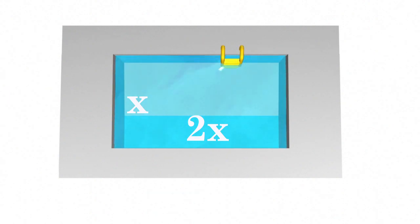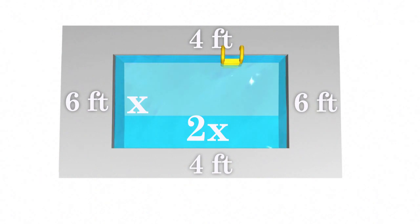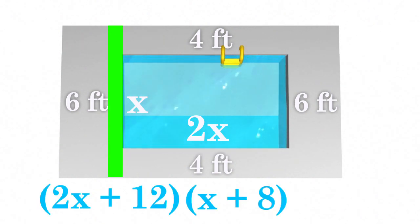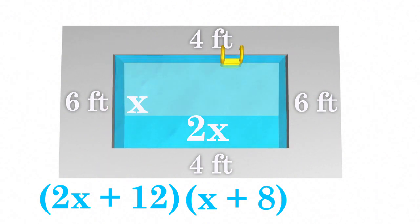We also know we want a 6-foot cement border on one side and a 4-foot border on the other side. Therefore, the dimensions of this rectangular pool are 2x plus 12 by x plus 8, which we have to multiply together to give us an area of a thousand square feet.